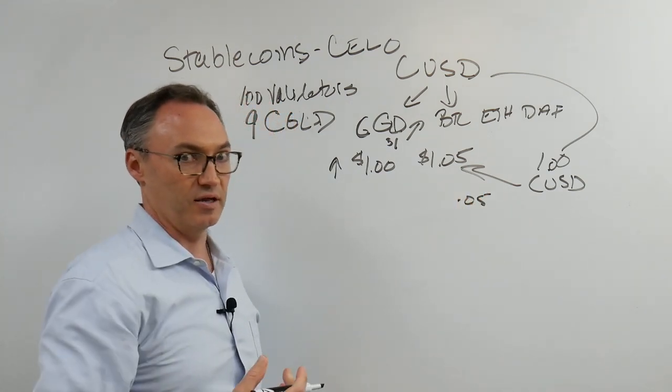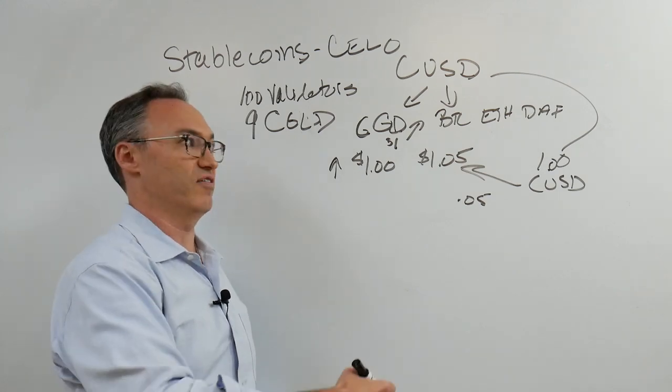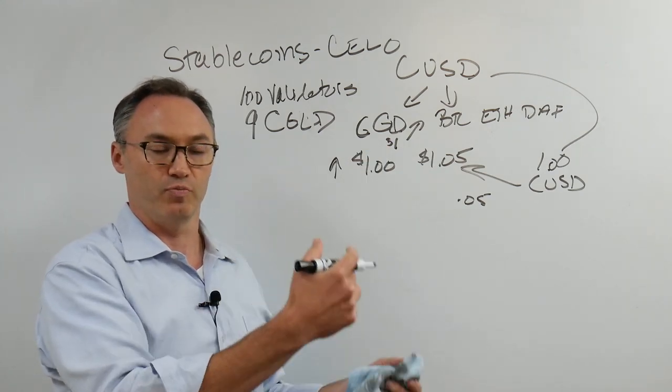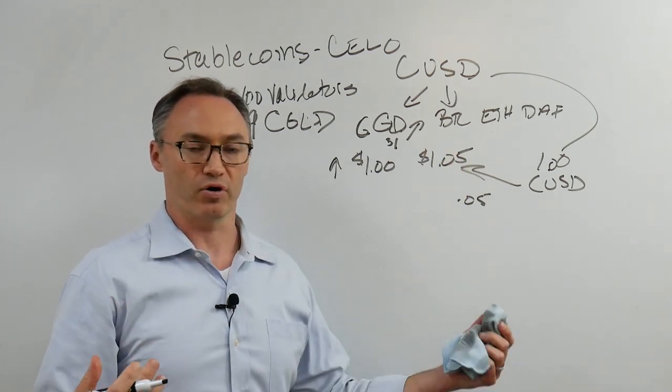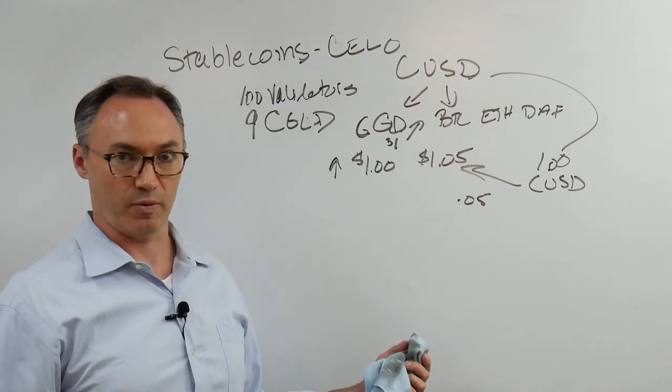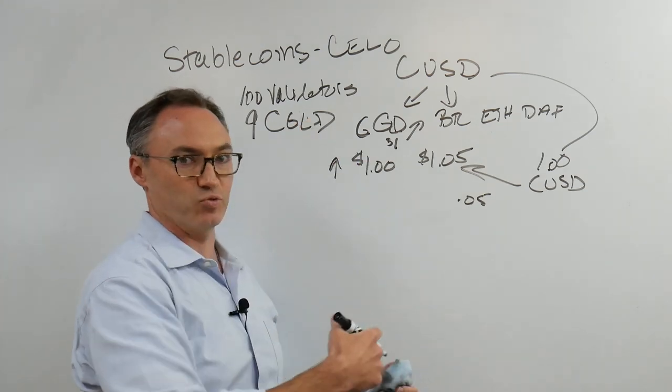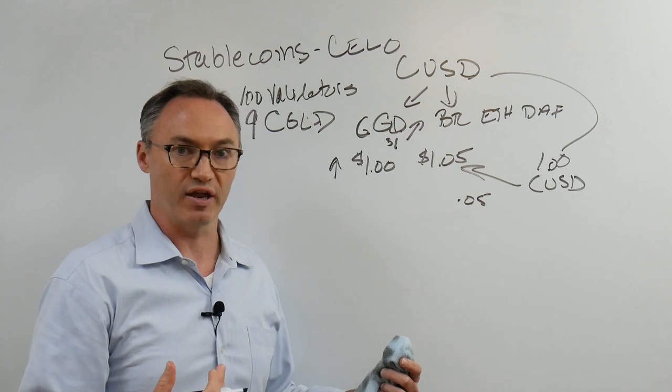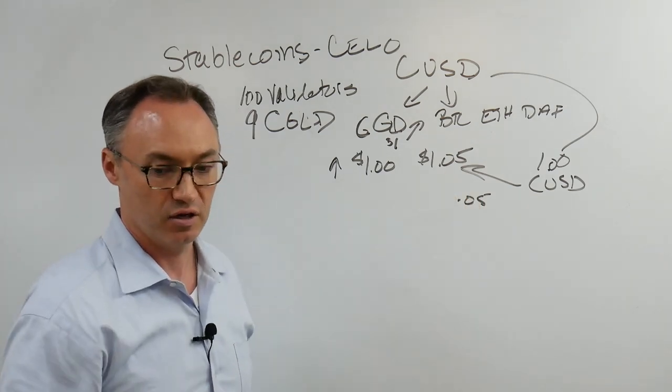Now what I've done is I've created arbitrage. The arbitrage opportunity is I can sell a dollar's worth of CGLD, get one CUSD and sell that for a dollar five and profit five cents. That doesn't sound like a lot unless I do it 5,000 times. The fact that I hold CGLD has gotten me this arbitrage ability that I wouldn't have had otherwise.